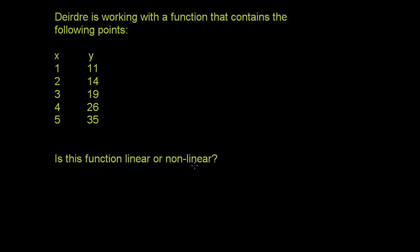So linear functions — the way to tell them is: for any given change in x, is the change in y always going to be the same value? For example, for any one-step change in x, is the change in y always going to be 3? Is it always going to be 5? If it's always going to be the same value, you're dealing with a linear function.